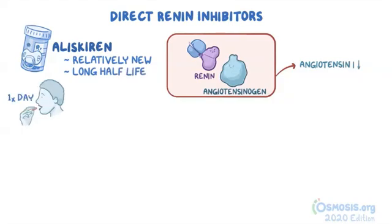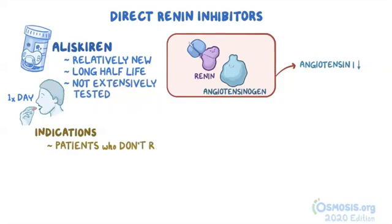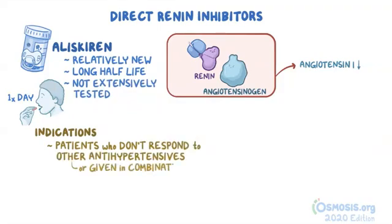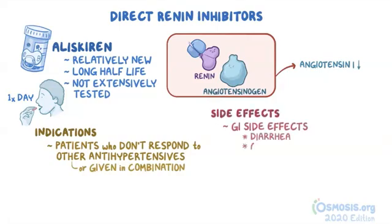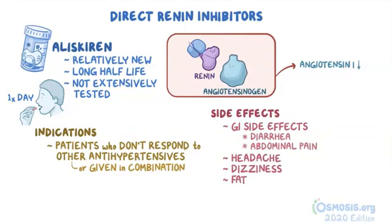Since aliskiren is younger in the medical field, it hasn't been as extensively tested. So it's commonly used for patients who don't respond to other antihypertensives, or it can be given in combination with other antihypertensives. Aliskiren can cause GI side effects like diarrhea and abdominal pain. Other side effects include headache, dizziness, and fatigue.